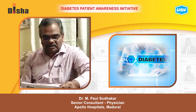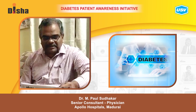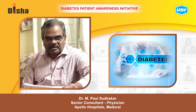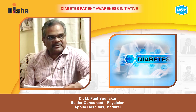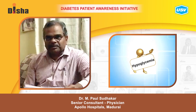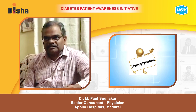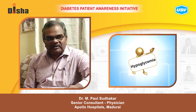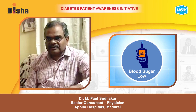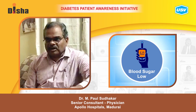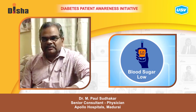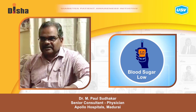I am going to talk about emergencies in diabetes. The most common cause is hypoglycemia. Hypoglycemia means a lower level of blood sugar than the normal level — that is below 70 mg per deciliter in the blood.